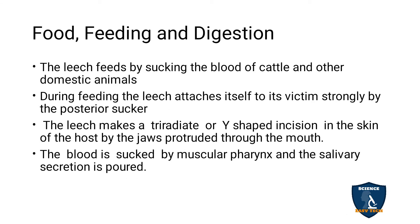The leech feeds by sucking the blood of cattle and domestic animals — it is a sanguivorous animal, meaning a blood-sucking animal. During feeding, the leech attaches to the host body with the help of the posterior sucker. The leech makes a tri-radiate or Y-shaped incision into the skin of the host.